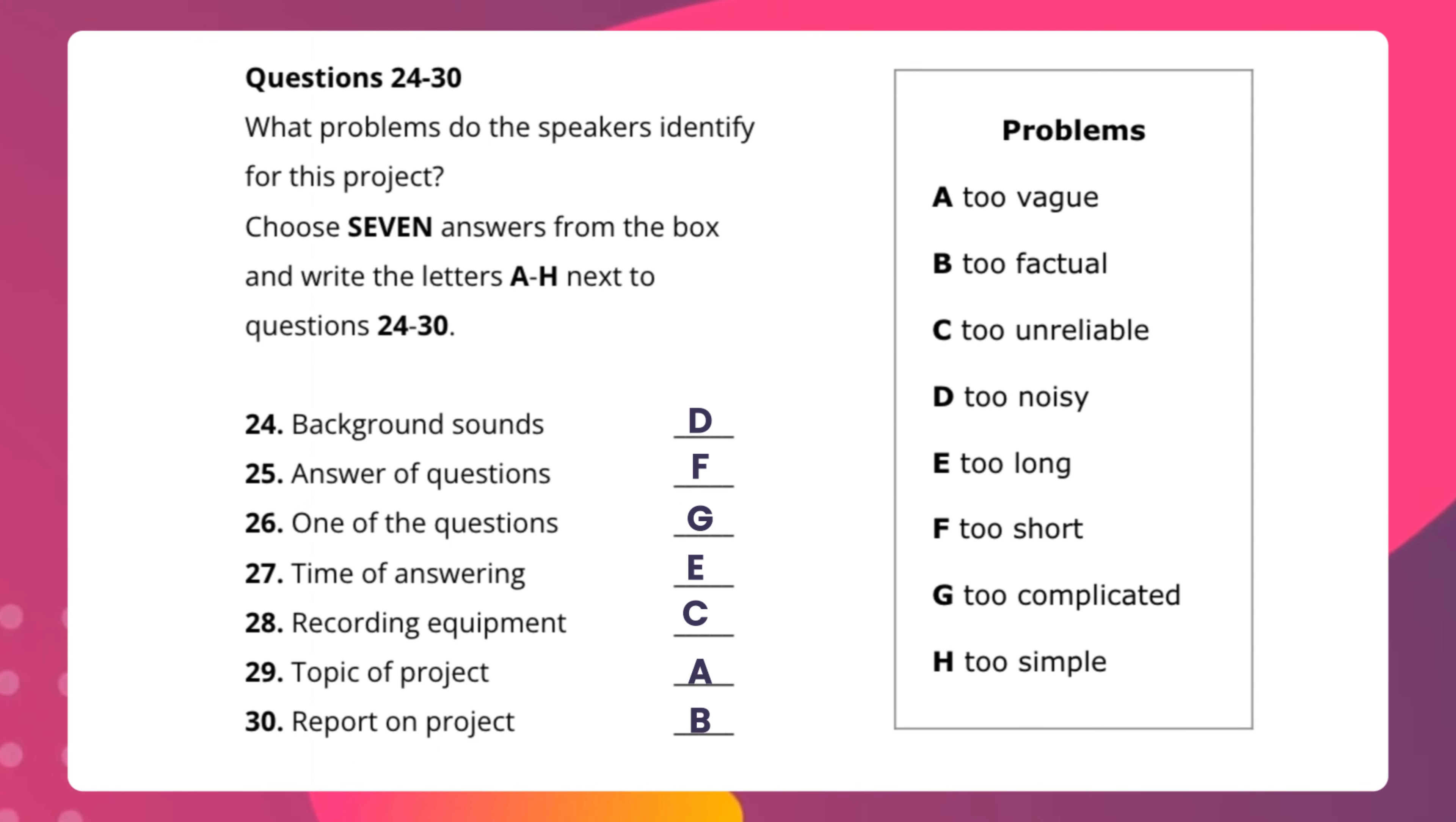Now here if you just see this can be predicted as well. Background sounds, it actually talks about noise and definitely you should have predicted when you're reading the questions the answer can be D. When we talk about answers then definitely it can be either too long or it can be too short so you can keep two answers in your mind or you can keep two answers with you and definitely anyone would have been correct. 26, one of the questions which says too complicated, so the questions can be easy or it can be complex.